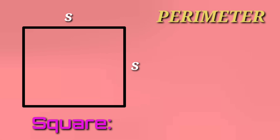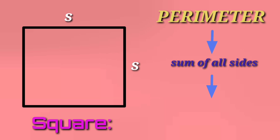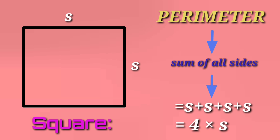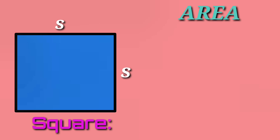Very good, kids! Now let's see what the perimeter of a square is. When we add all four sides of the square — that is, only the boundary of the square — that is called the perimeter, and the formula is 4 multiplied by side.